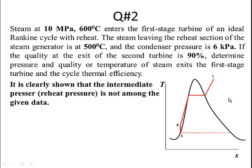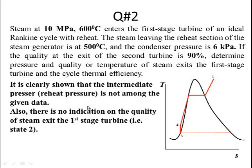To locate state 2, the exit from the first stage turbine, we need more information. Looking back at the given data, there is no information provided for the intermediate pressure. In fact, the question itself asks us to find the intermediate pressure. There is also no indication in the problem of any other property of the steam leaving the first turbine, such as quality.